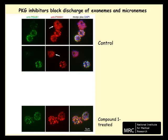We eventually found that the way in which the inhibitors of PKG prevent SUB1 activity against its endogenous substrates is to block the release of SUB1 from exonemes, as well as the release of another class of secretory organelles called micronemes.